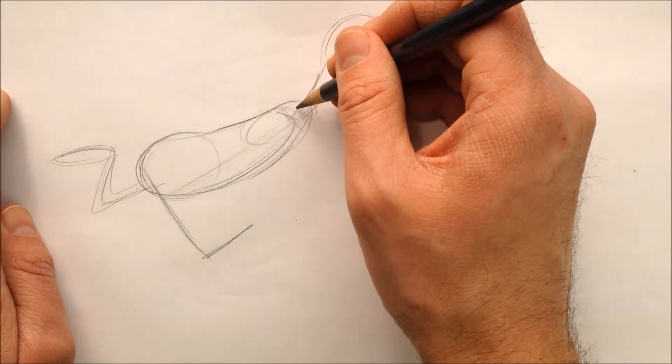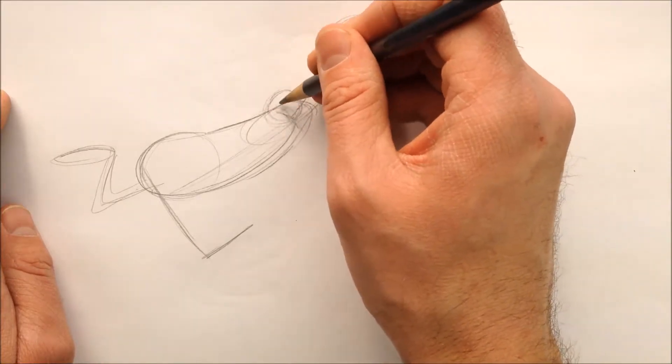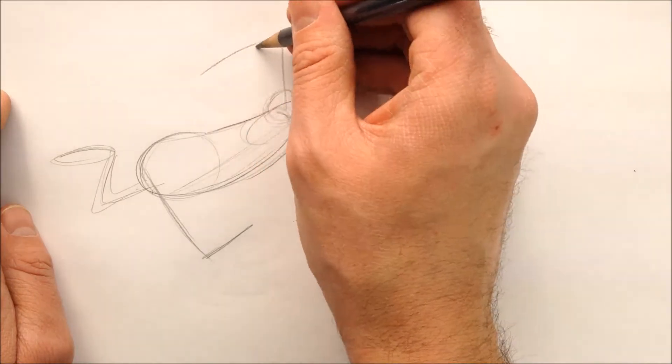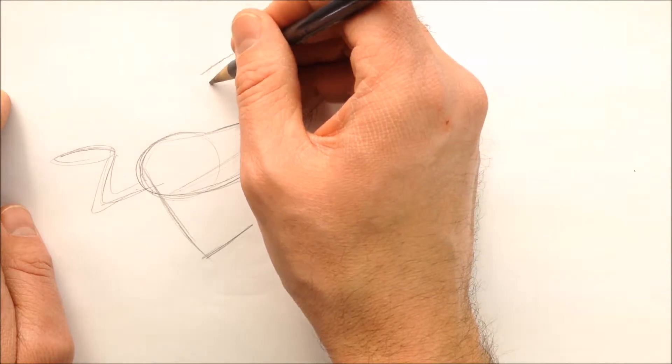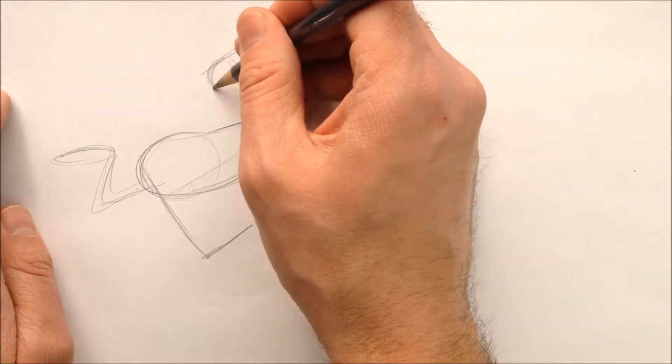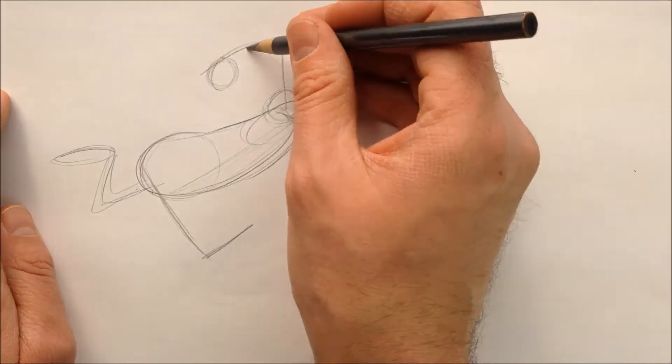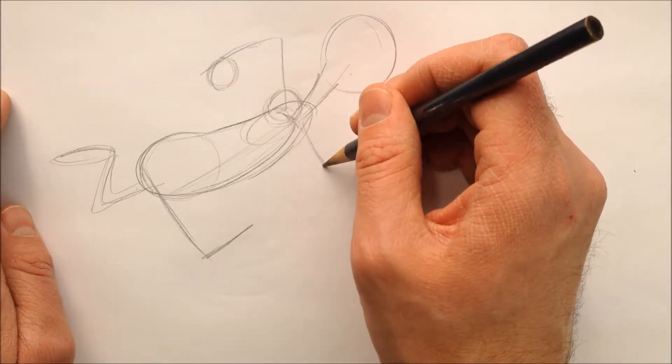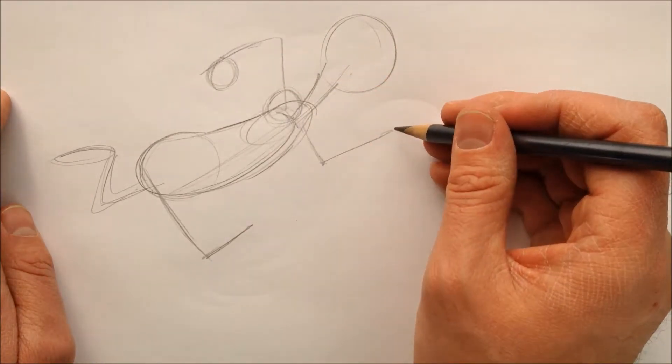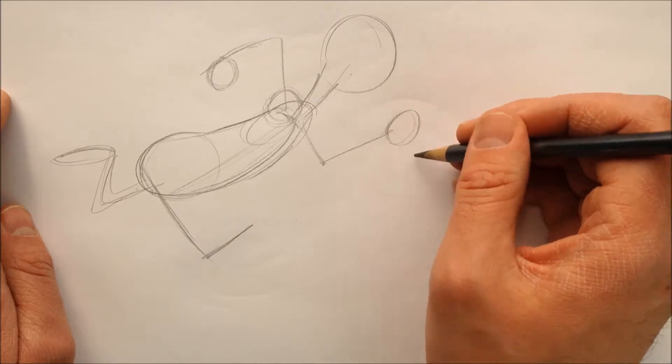His front arm, put his shoulder there, is going to come up and down, and we're going to curve that hand around. And then his back arm down and up.